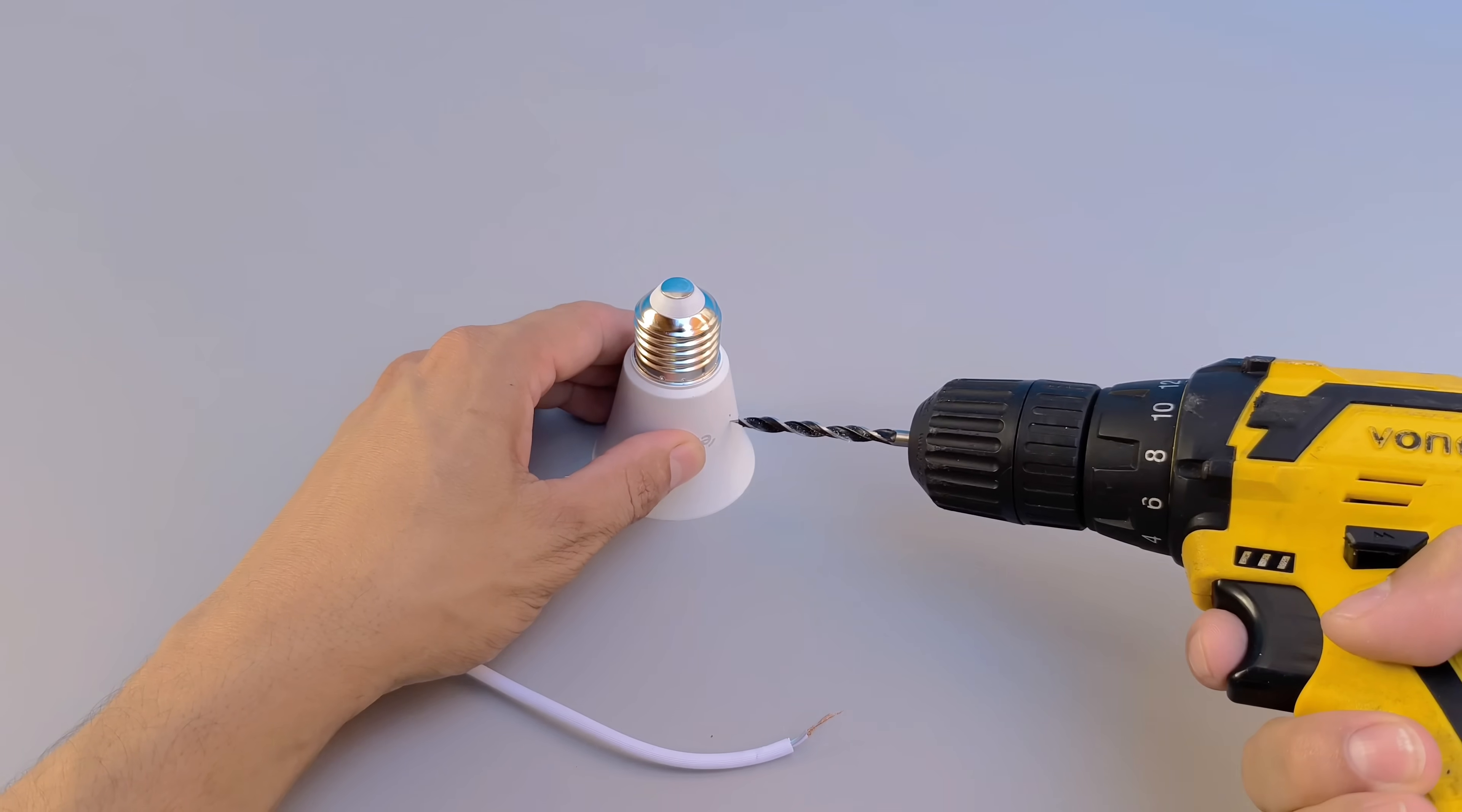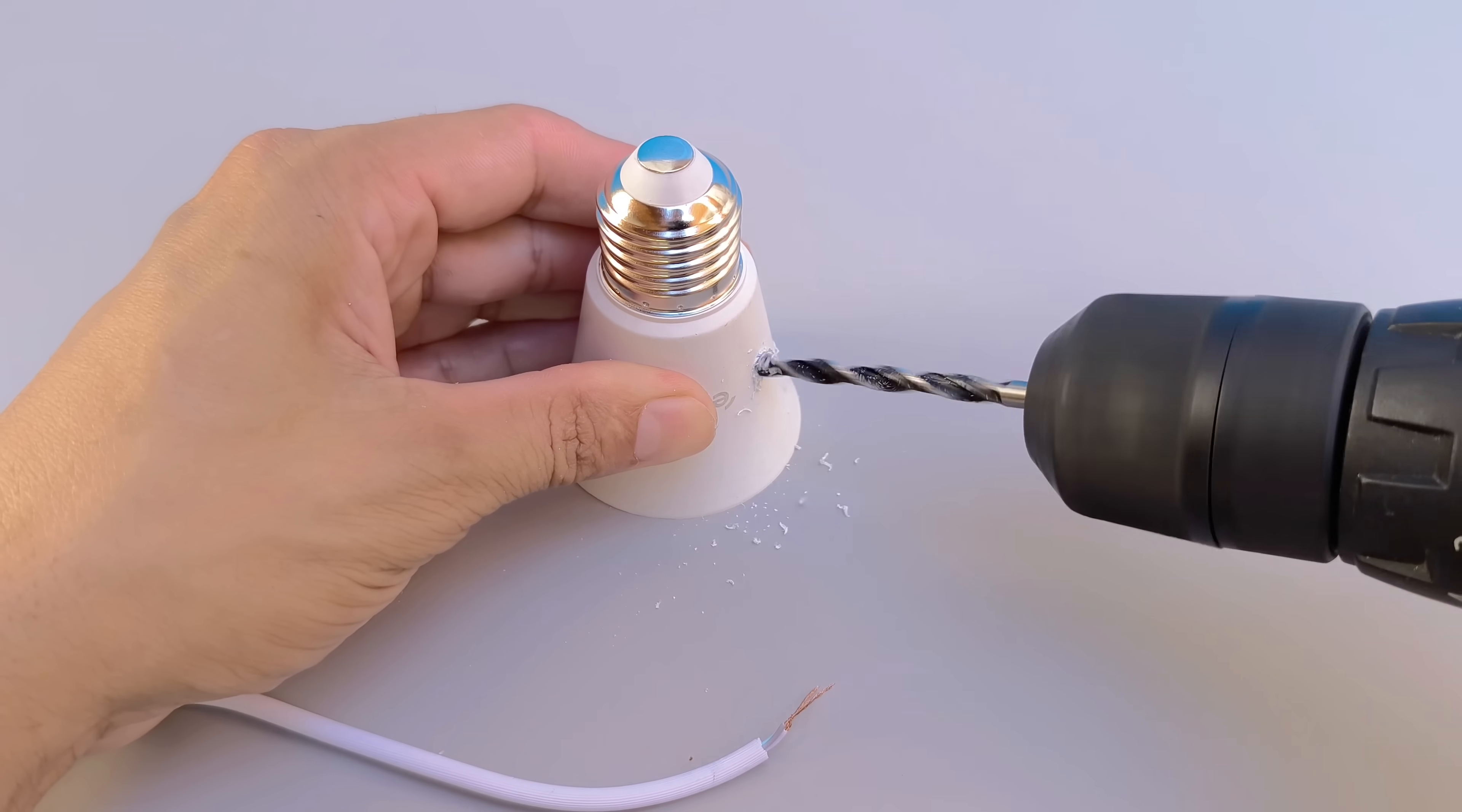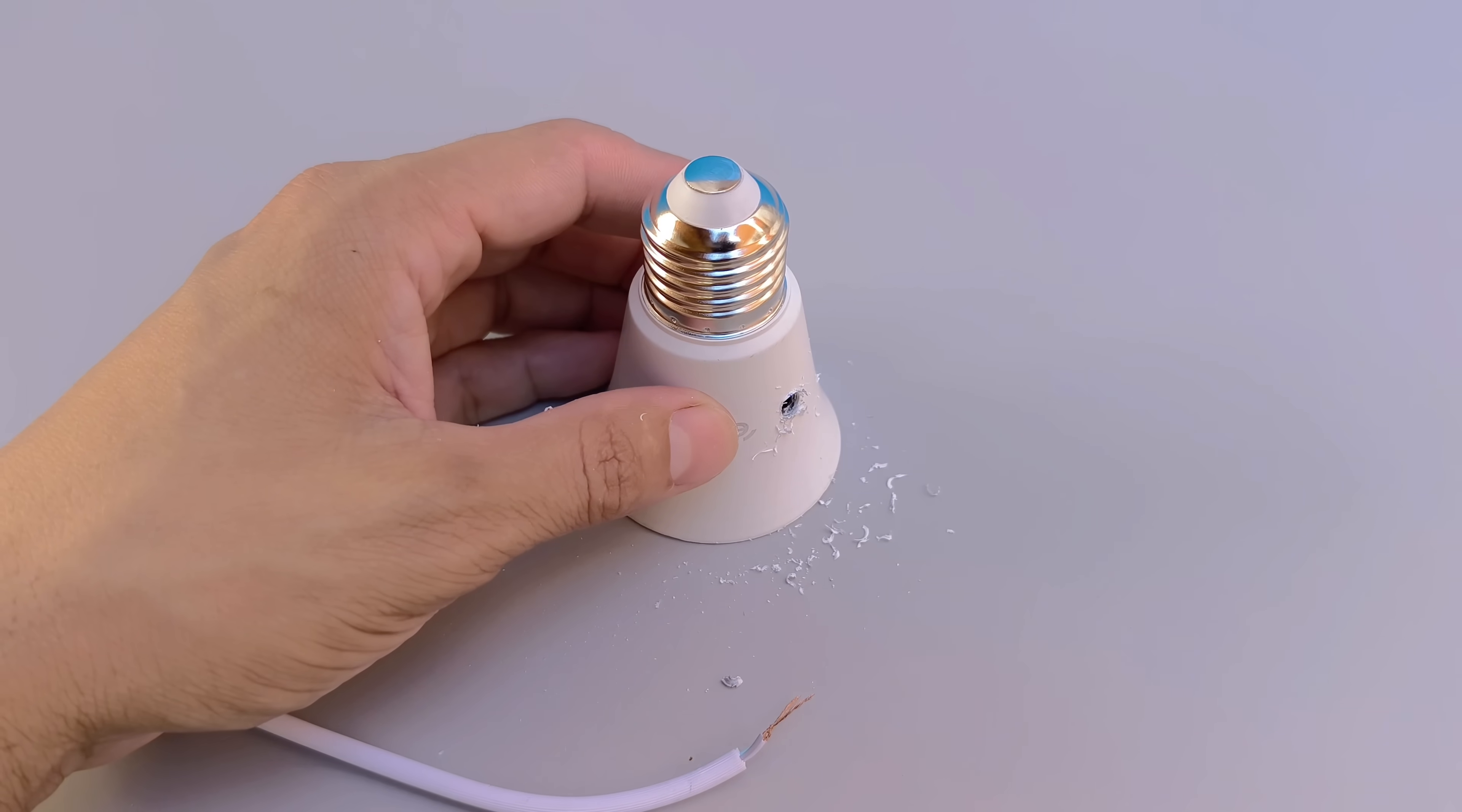Take a drill and make a hole in the plastic base of the lamp, preferably with a 4mm diameter drill bit. This hole will be used to pass the USB cable through safely and neatly.